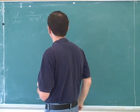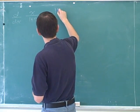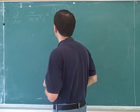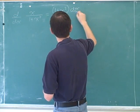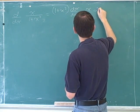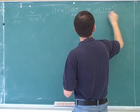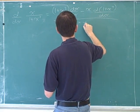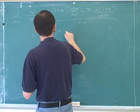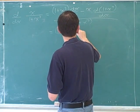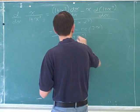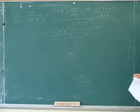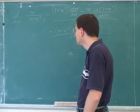So that's low d high minus high d low over low squared. So that would be low d high. The derivative of the top is 1. Alright. Yeah. Minus high d low over low squared. So that would be 1 plus x squared. And this derivative is 1 minus x times, and this derivative is 2x over 1 plus x squared squared. Does this look like what you had?